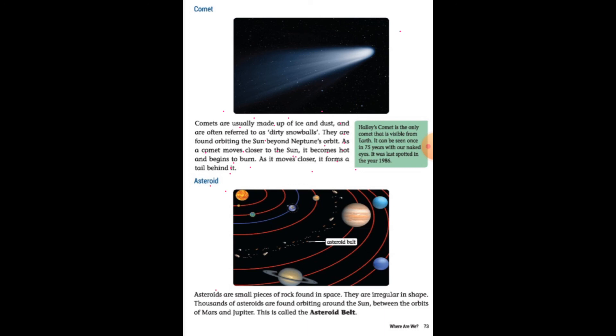Asteroids are small pieces of rocks found in space. They are irregular in shape. Thousands of asteroids are found orbiting around the sun between the orbits of Mars and Jupiter. This is called the asteroid belt.